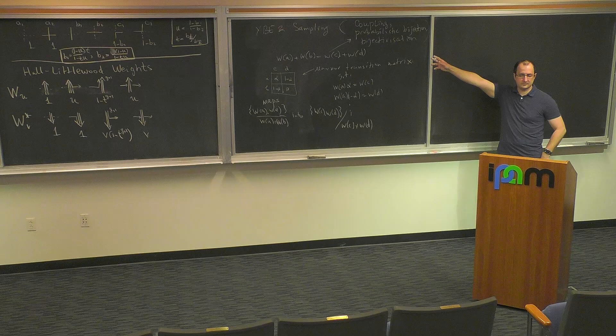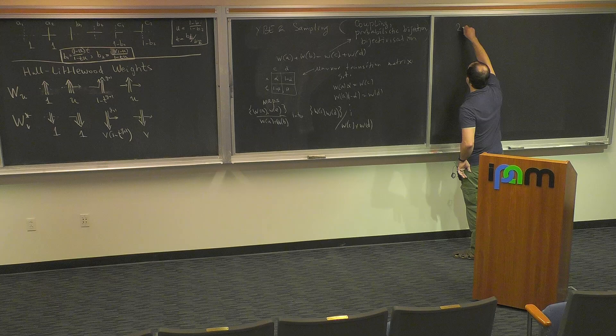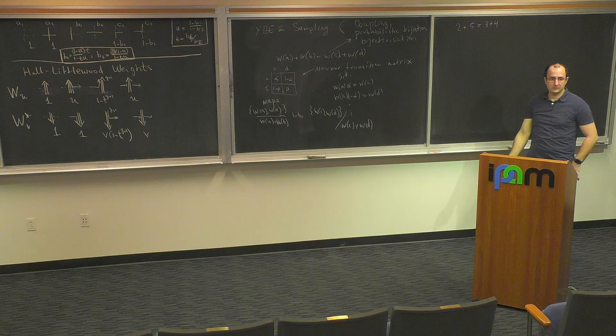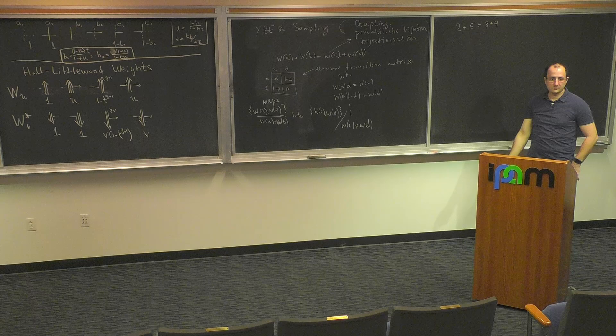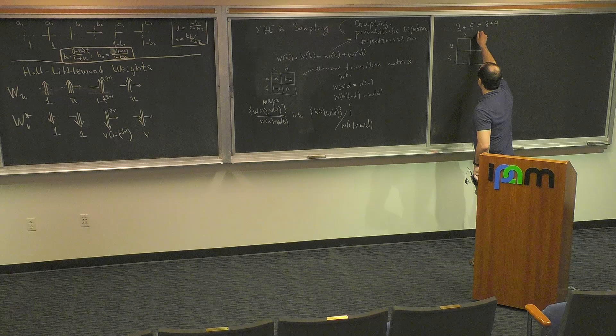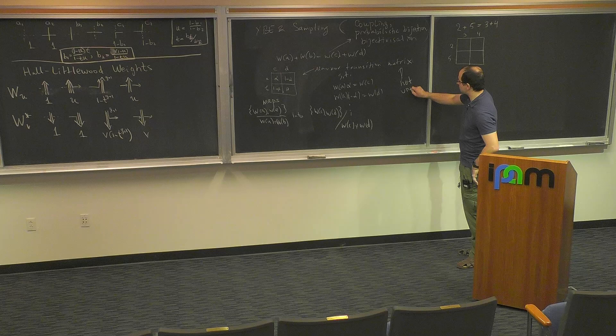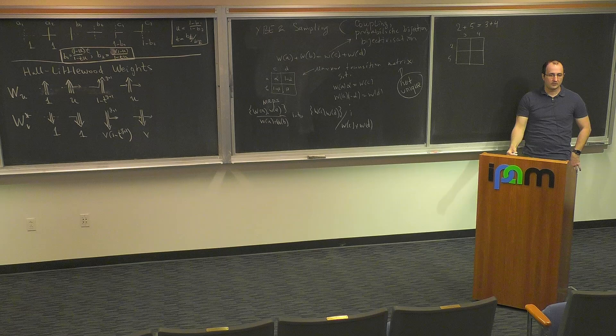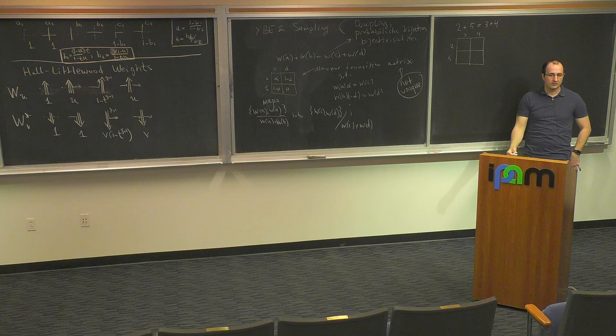For example: take the identity 2 + 5 = 3 + 4. You cannot map term by term since 2 ≠ 3 and 5 ≠ 4. Instead you couple the two distributions. The independent coupling would distribute the weight 2 between 3 and 4 proportionate to 3 and 4: transition probabilities 3/7 from 2, 4/7 from 2. Another choice: all of 2 goes to 4 and 3/5 of 5 goes to 3 with 2/5 of 5 to 4. Coupling is not unique; there are many different couplings.